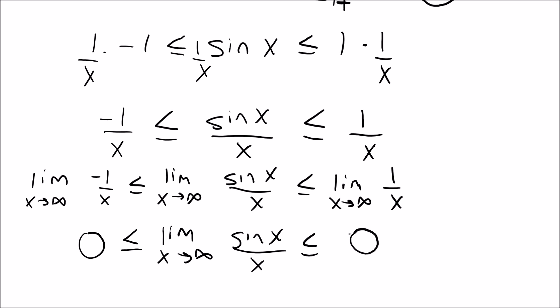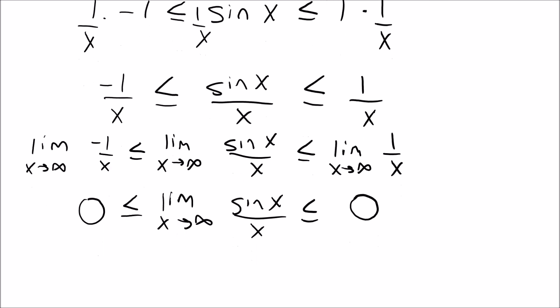So that means if zero is less than or equal to the limit as x approaches infinity of sine x over x, and that's less than or equal to zero, well then this whole thing here, the limit as x approaches infinity of sine x over x, must also be zero, because that's the only thing that can go between zero and zero and make this true.